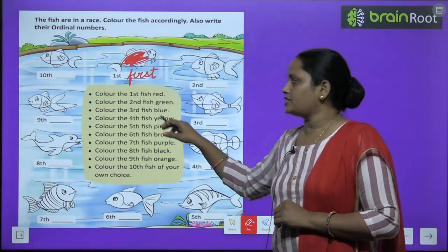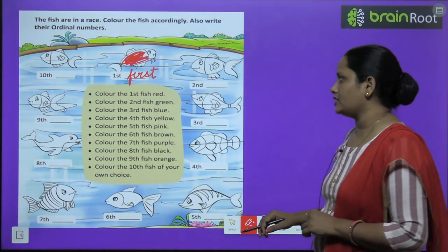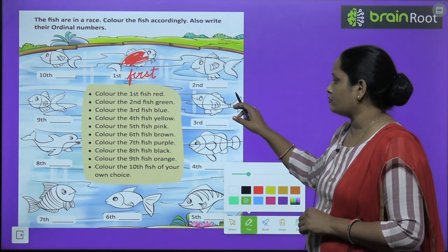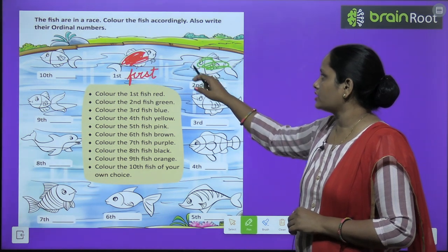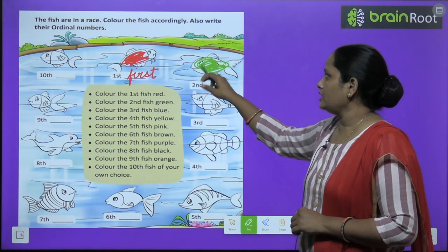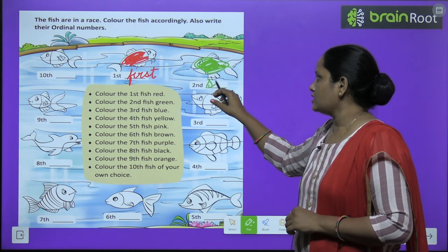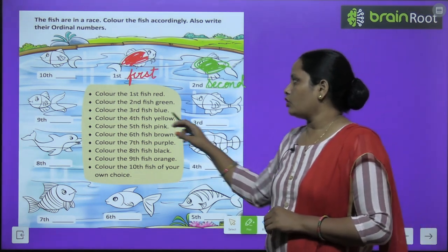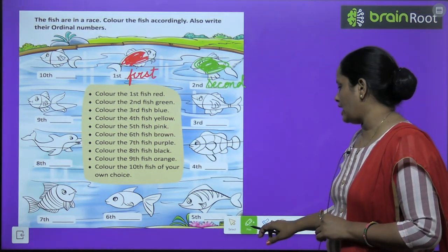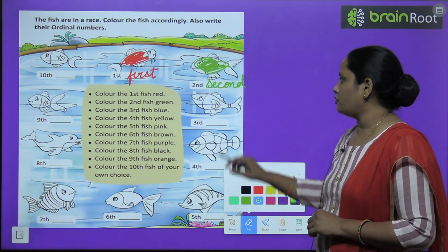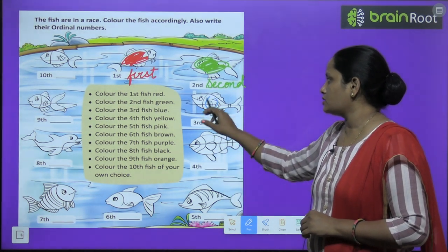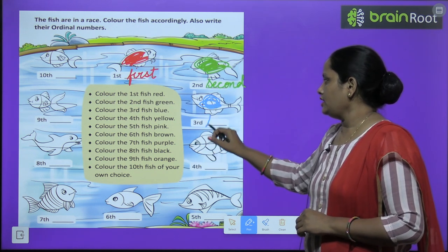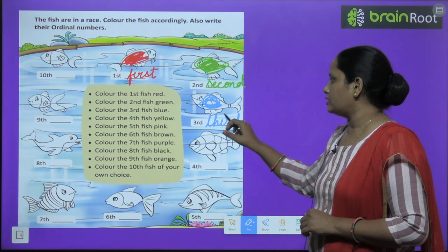Next: color the second fish green. Which is the second fish? Here it is. So we do green color and write S-E-C-O-N-D, second. Now the third fish should be blue color. Where is the third fish? Here it is — we fill it with blue color and write T-H-I-R-D, third.